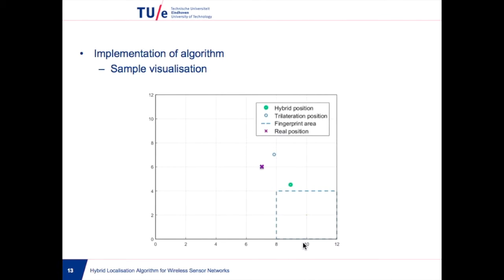By trilateration, the node is located approximately at coordinates 8,7, which is the blue marker.